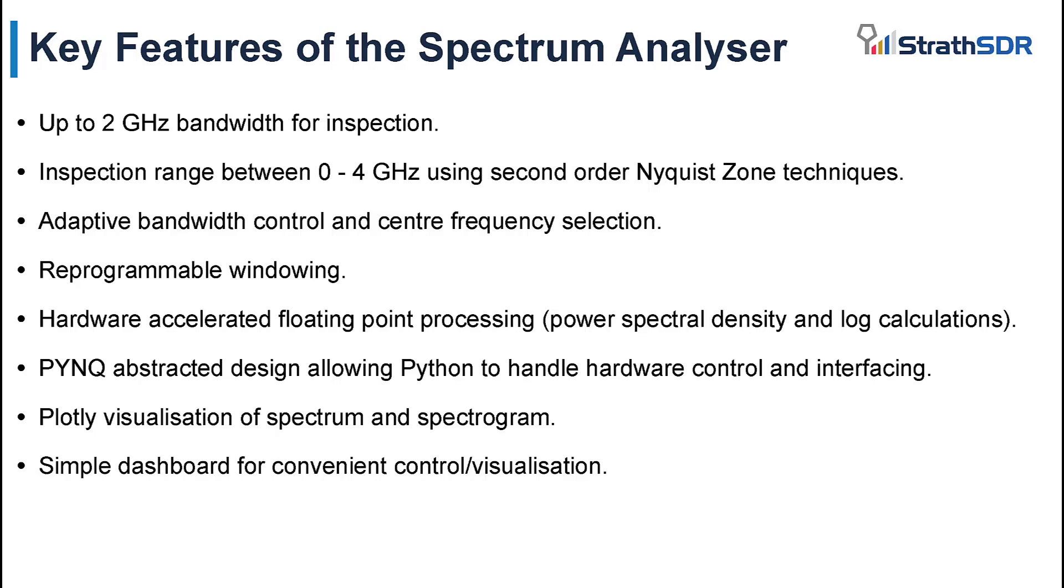Let's now summarize the key features of the RF SOC Spectrum Analyzer tool. The Spectrum Analyzer is able to inspect 2 GHz of instantaneous bandwidth. This bandwidth is possible as the RF ADC is operating at 4 GHz samples per second. The inspection range of the Analyzer is between 0 and 4 GHz. Although 2 GHz of bandwidth can be inspected at one time, using second-order Nyquist zone techniques allows the inspection range to increase from 2 GHz to 4 GHz. The Spectrum Analyzer has adaptive bandwidth control and center frequency selection by using the RF ADC's fine mixer, decimation stages and further decimation stages in the RF SOC's programmable logic. The Analyzer features reprogrammable windowing, hardware floating point processing and uses PYNQ to handle hardware control and interfacing from software. As you will see in the next session, the Plotly Python library is used to visualize the Spectrum and waterfall plot.